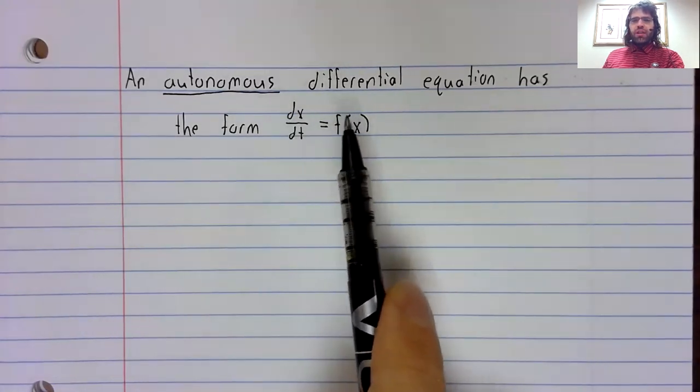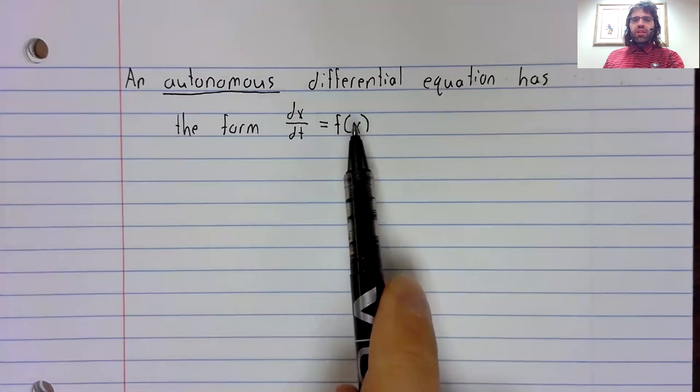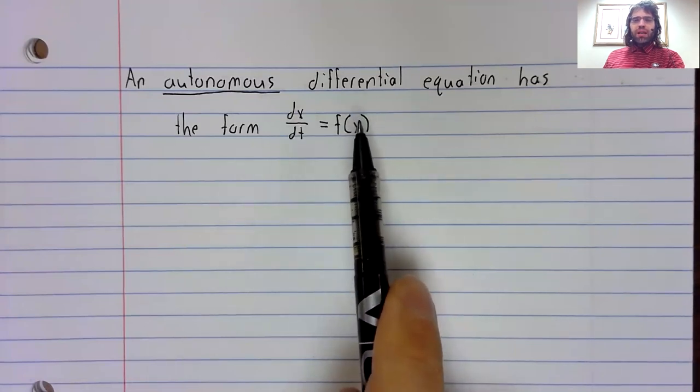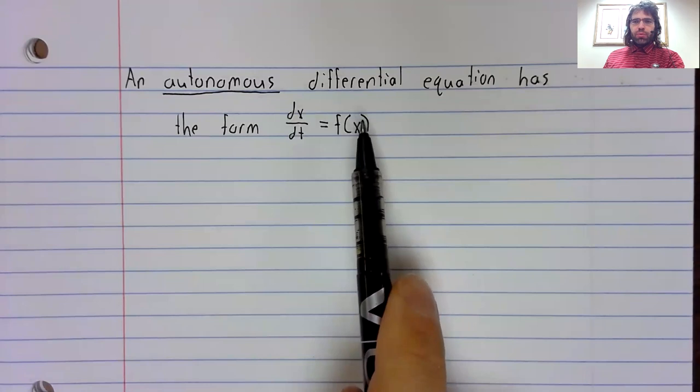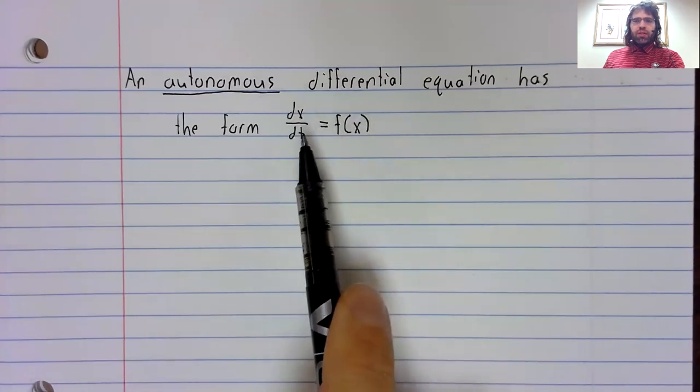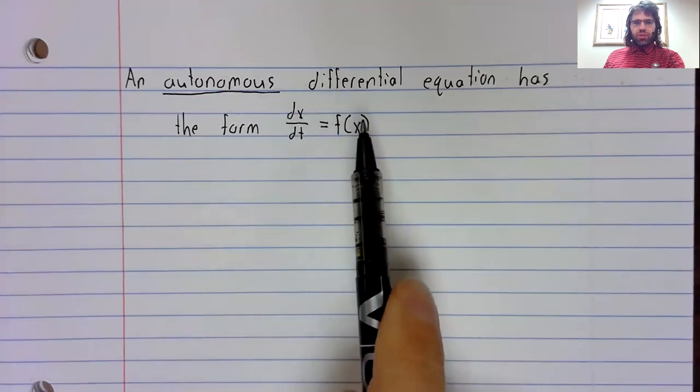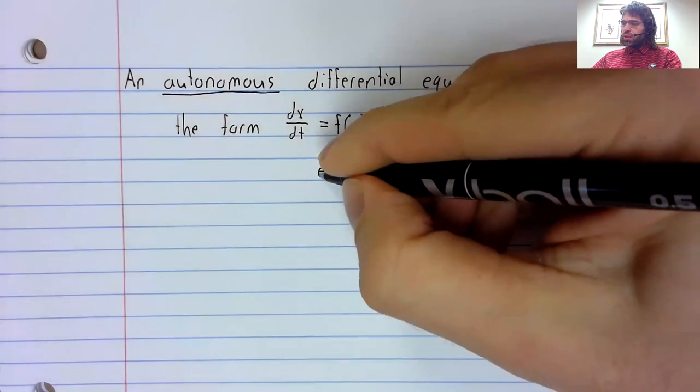Our independent variable here is t. It does not appear on the right hand side of this equality.